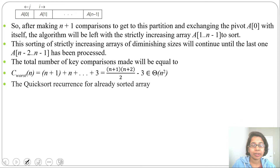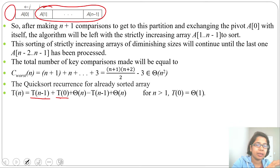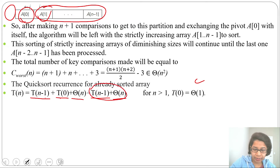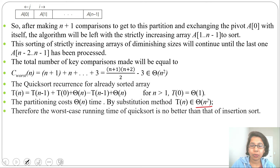The recurrence relation for this worst case is T(n) = T(n−1) + T(0) + θ(n) for n > 1, where T(0) = constant, giving T(n) = T(n−1) + θ(n). Solving this recurrence relation gives running time θ(n²). This worst case applies to both strictly increasing and decreasing arrays. Therefore, the worst case running time of QuickSort is no better than insertion sort.